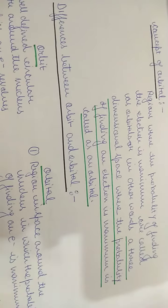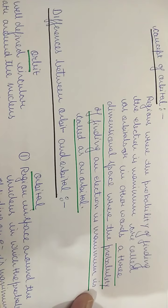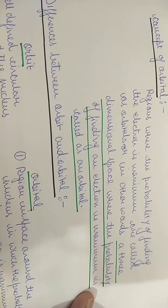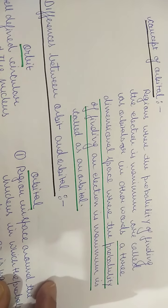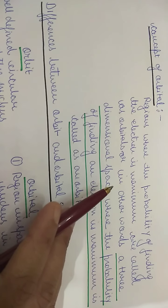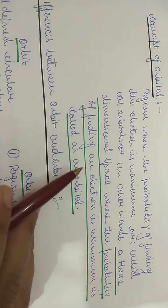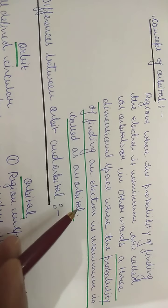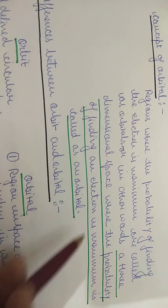Today we will start with the concept of orbital. We have already done the Schrödinger wave equation and normalized and orthogonal wave functions. An orbital is defined as the region in three-dimensional space around the nucleus where the probability of finding an electron is maximum. That space where there is probability that we can find an electron, we call that space an orbital.